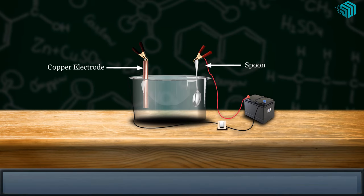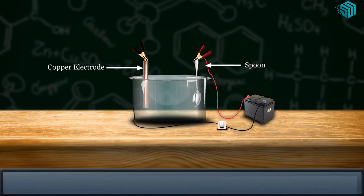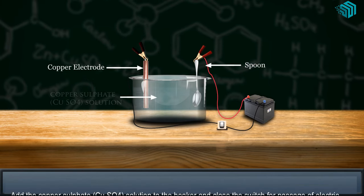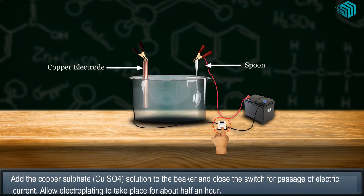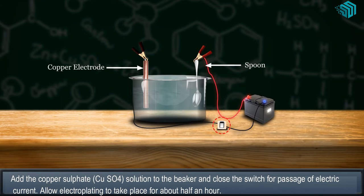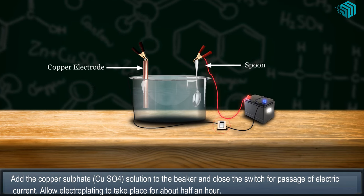Add the copper sulfate (CuSO4) solution to the beaker and close the switch for passage of electric current. Allow electroplating to take place for about half an hour.